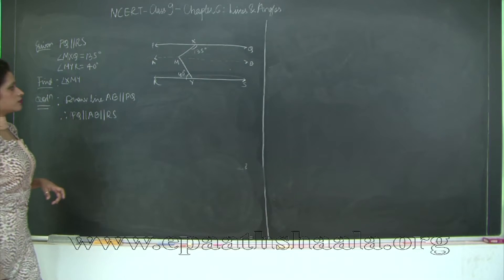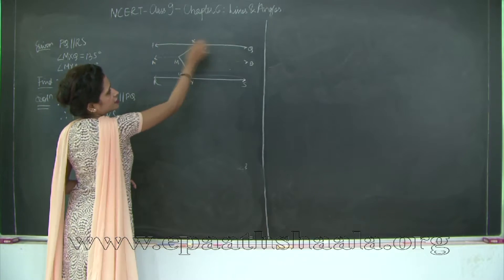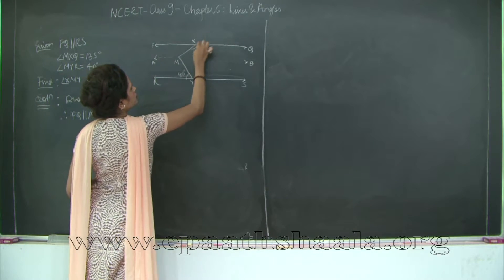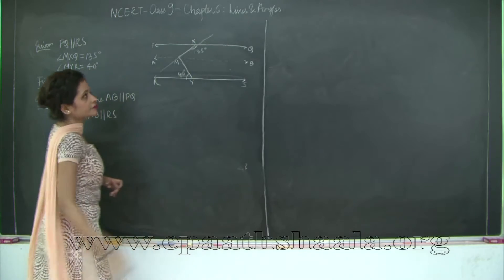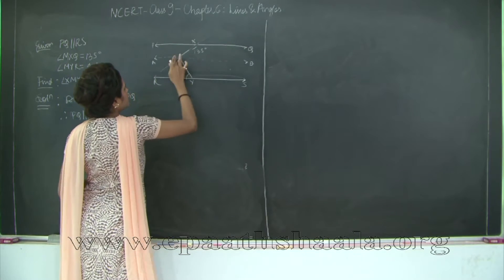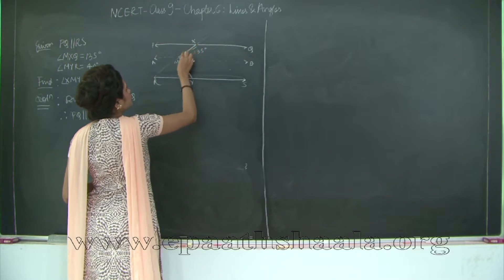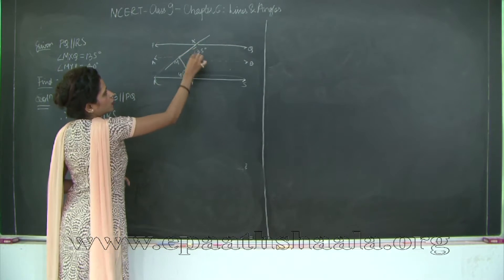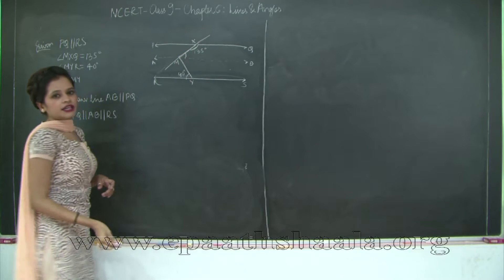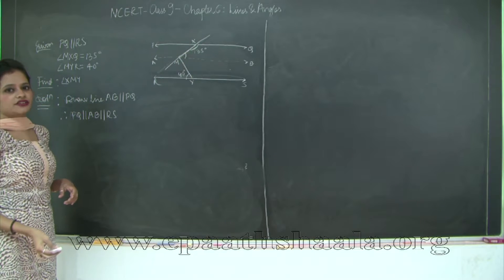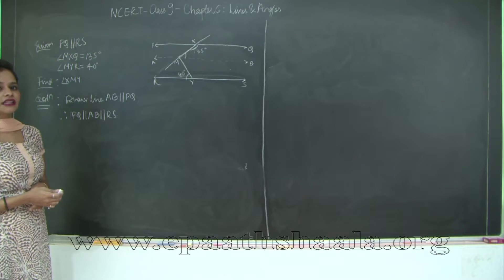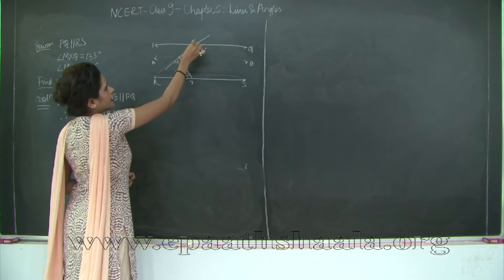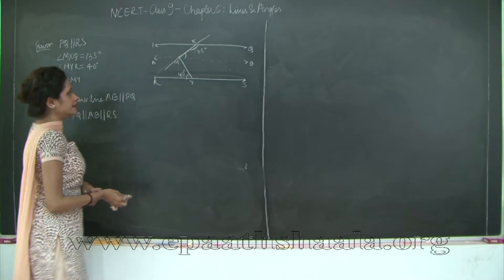Now, if we take into consideration these two parallel lines PQ and AB, this line is more like a transversal here. For these two lines, these are a pair of interior angles on the same side of the transversal. What did we learn about interior angles on the same side of the transversal? That they are supplementary. Which means angle QXM and angle XMB is equal to 180 degrees.